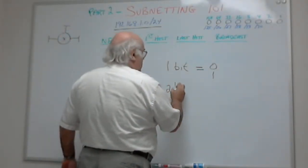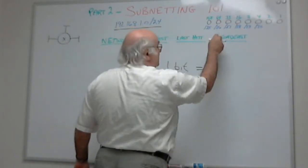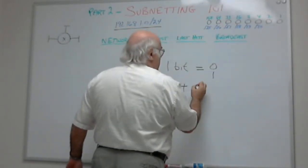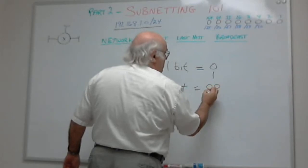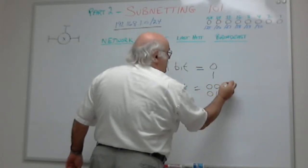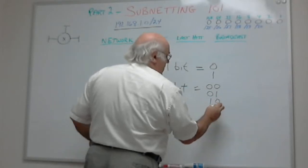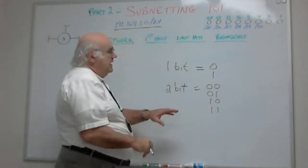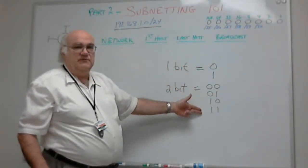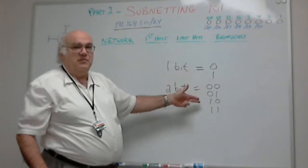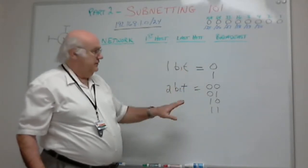If I take two bits, I can have 00, 01, 10, and 11. With just two bits I can create four different numbers, or four different networks.